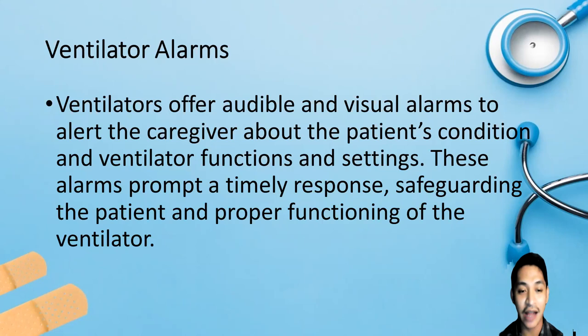When an alarm sounds, ask help from colleagues or the respiratory therapist on duty. To manage an alarm: first, assess the patient for distress. Identify the alarm — whether high pressure or low pressure. Some ventilators have indicators showing the cause of the alarm, so check the machine as well. It is critical that whenever an alarm occurs, the caregiver evaluates the patient first before checking the ventilator.